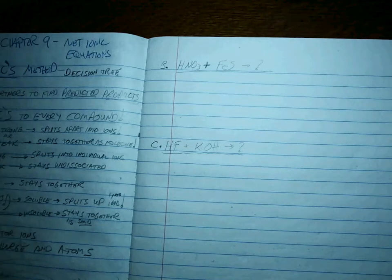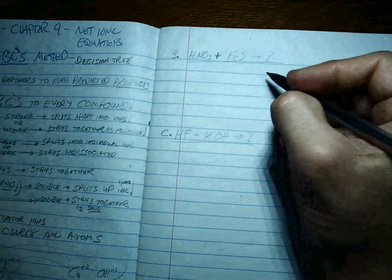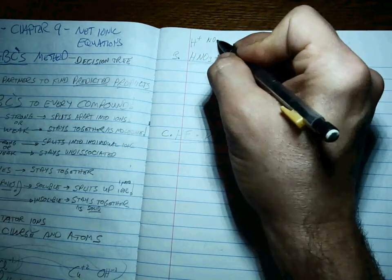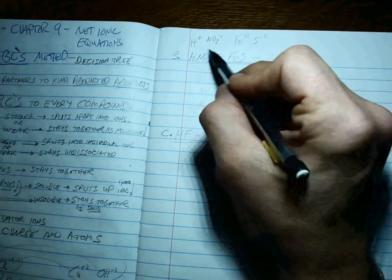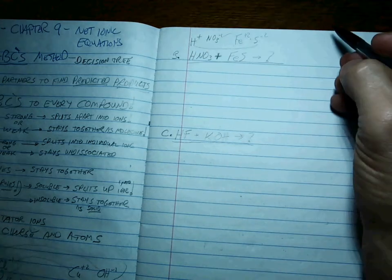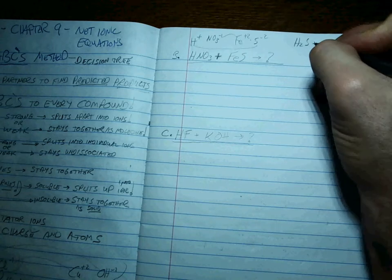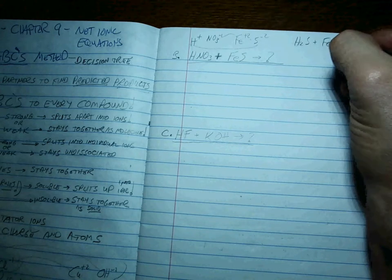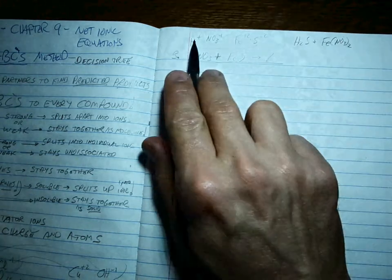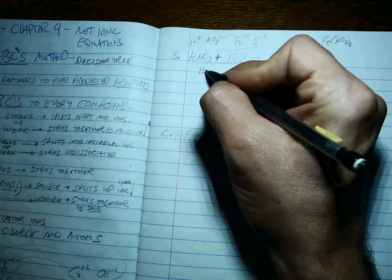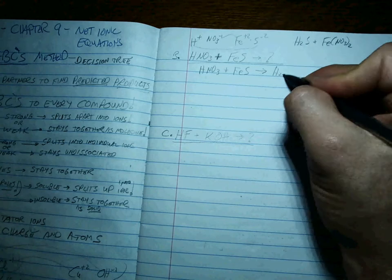The ABCs allows you to go through pretty quickly. Let's try that one. HNO3 plus FeS. Split them up into their individual ions and switch partners. That's plus with that minus. That's plus with that minus. So what would that make? That would make H2S plus Fe(NO3)2. That cation plus that ion makes that. That cation plus that ion makes that. So these are the reactants and these are the predicted products.